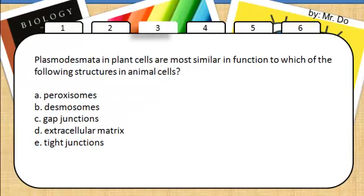Three. Plasmodesmata in plant cells are most similar in function to which of the following structures in animal cells. That would be C. Gap junction. I kind of gave it away in number 2.